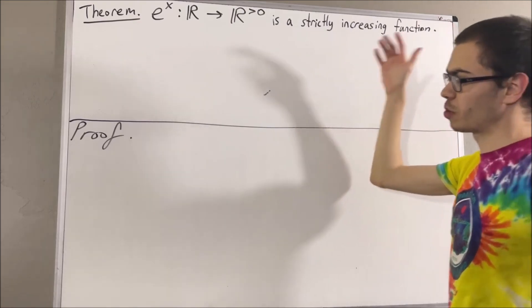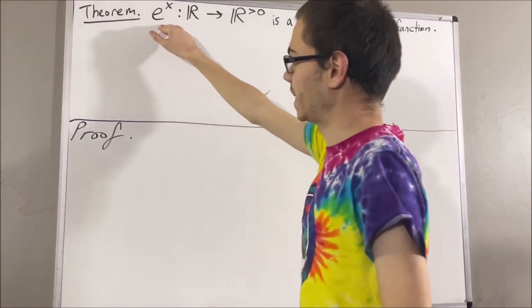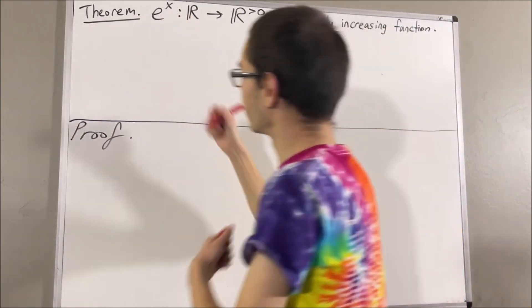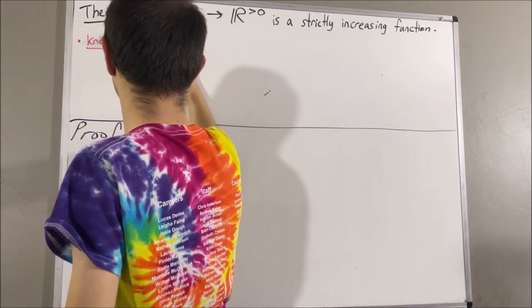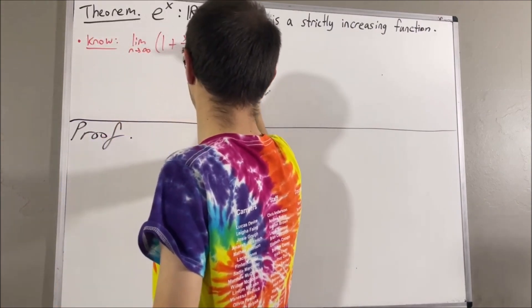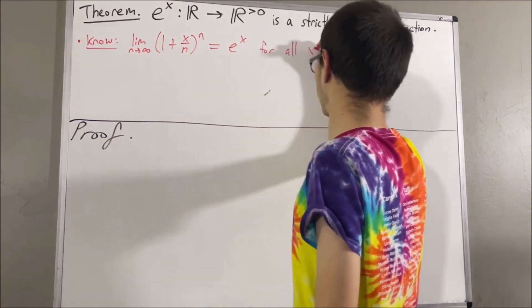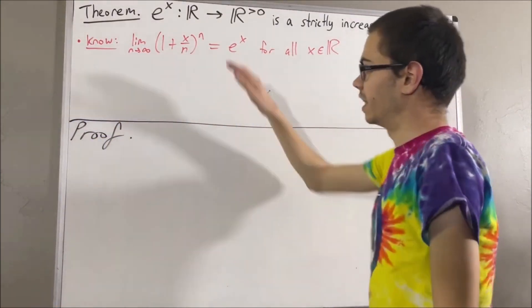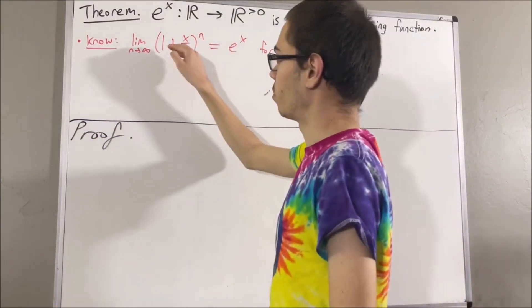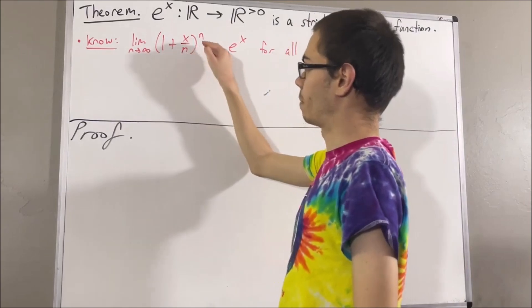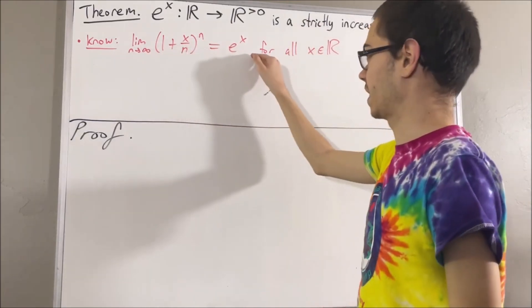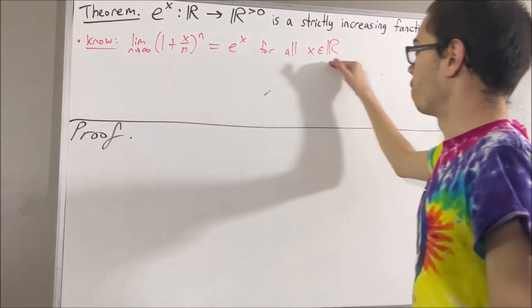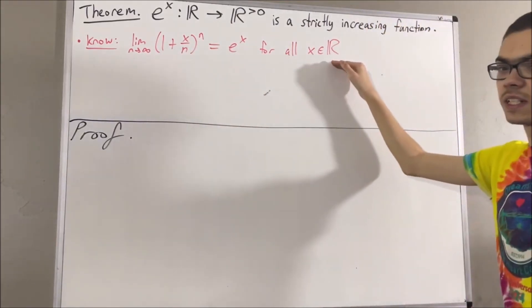First, let's remind ourselves what e to the x is. The limit of 1 plus x over n to the power of n is equal to e to the x, for all real numbers x.